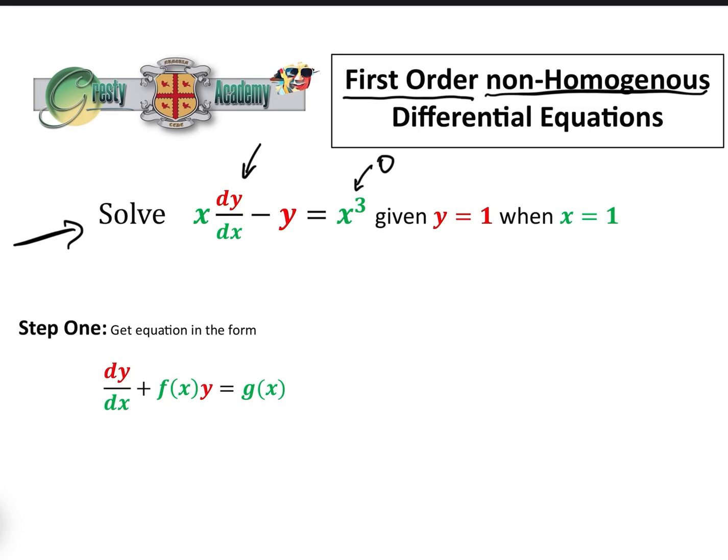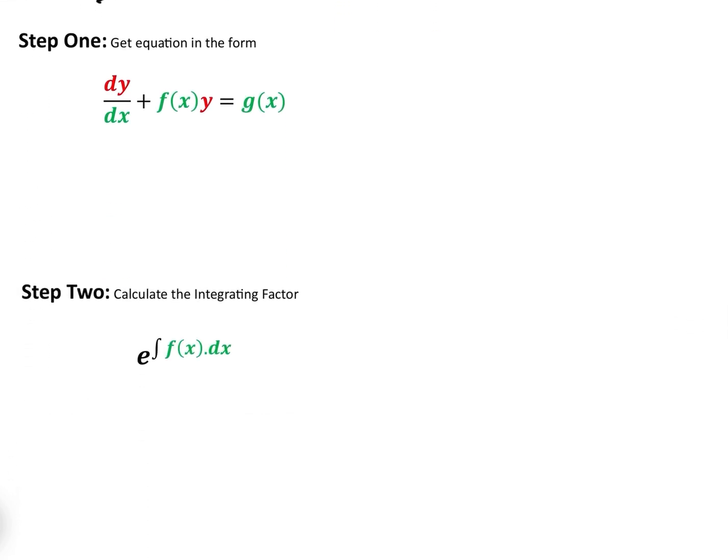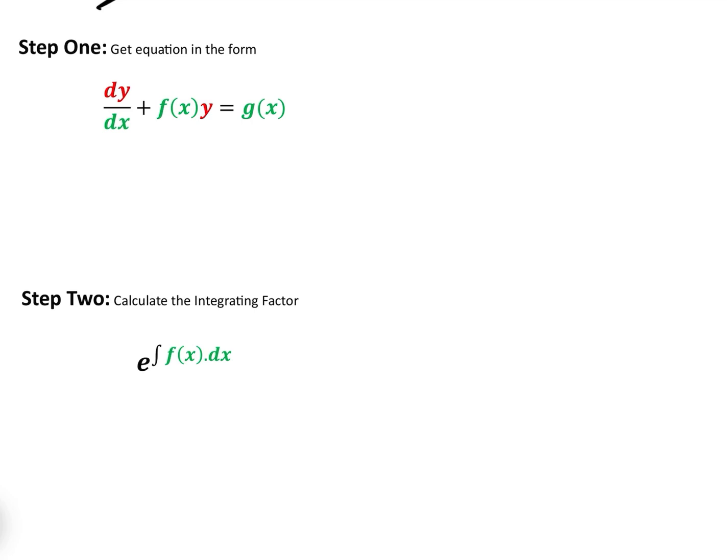So anyway, these are the five steps on how we will solve this type of equation, which is an absolute mainstay of college entrance exams. Step one is we get the equation into the form dy dx plus f of x, y equals g of x.